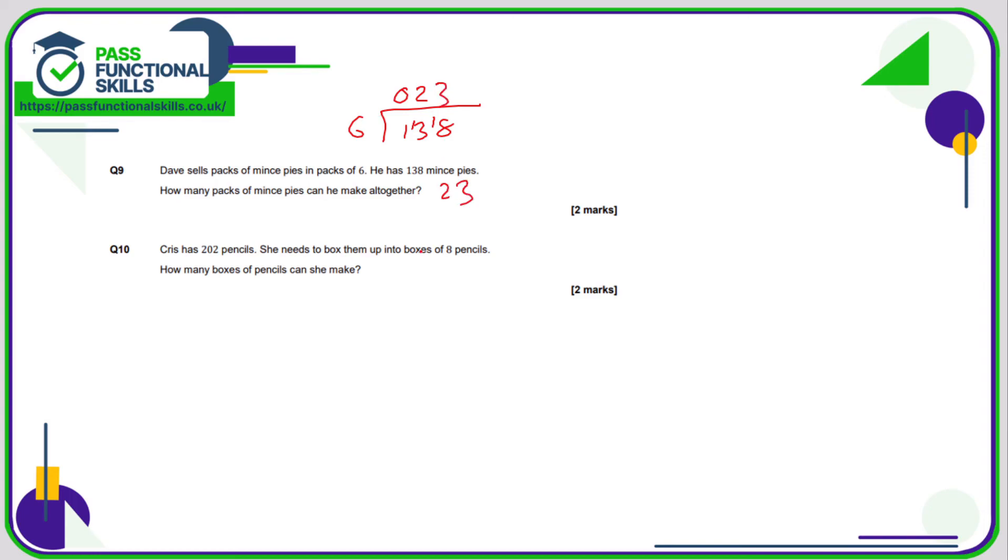This question we're dividing 202 by eight. Two divided by eight is zero, carry the two over. 20 divided by eight is two with a remainder of four. Now 42 divided by eight is five with a remainder of two. So therefore 25 boxes and two random pencils, which who knows what you'll do with those. So the answer here is just 25.